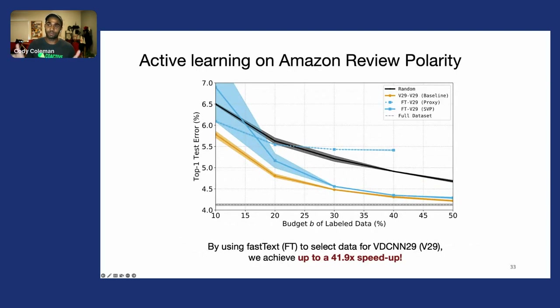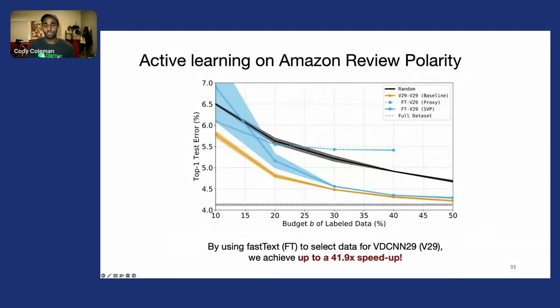On Amazon Reviews, with several million reviews, we take a very small, shallow model—FastText—which can be trained in a matter of minutes on a laptop, to select data for a much larger model, VDCnnN29, which takes close to 16 hours to train on GPUs.